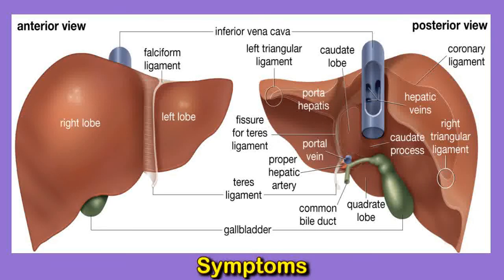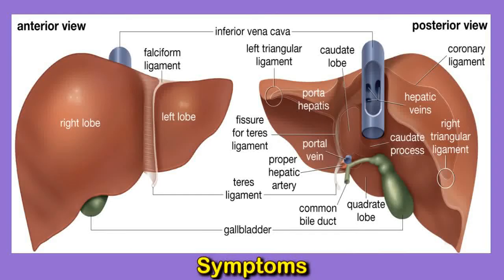The initial symptoms can vary, but some of the most common indicators of early cirrhosis include poor appetite, feeling weak, unexplained exhaustion, unexplained weight loss, nausea and vomiting, and discomfort or mild pain in the upper right abdomen.